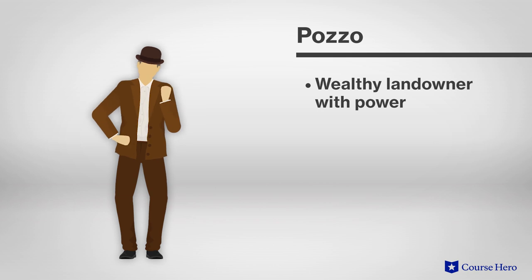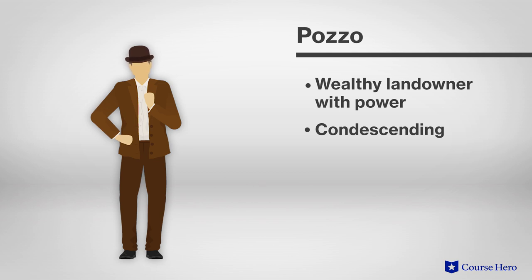Pozzo is a wealthy landowner with power and resources, and he sees Vladimir and Estragon as beneath him, but condescends to talk with them anyway. Mostly, he just likes the sound of his own voice. His concern with appearances and social conventions is ridiculous, pointing out their meaninglessness.